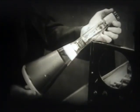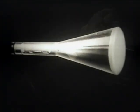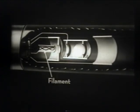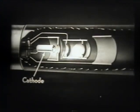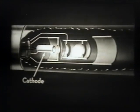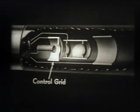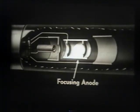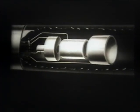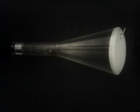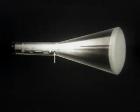Let's take the glass container off a typical tube and see what's inside. At the base of the tube is a filament. Fitting over the filament is the cathode, a cylinder coated with earth oxides. Around the cathode is a shield called the control grid. Next are two anodes: the first is the focusing anode and the second is the accelerating anode. These parts make up what is called an electron gun because it shoots a beam of electrons at a screen. At the end of the tube is the screen. All these parts are enclosed in an evacuated glass envelope.